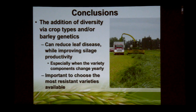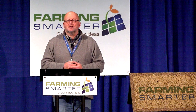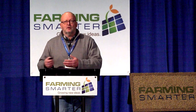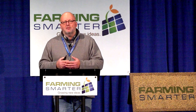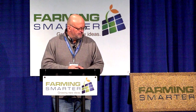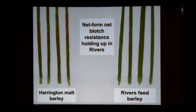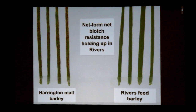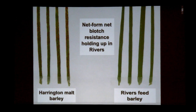One very important lesson from this study: choose the most resistant varieties possible. If you're looking at using mixtures or intercropping, try to choose a variety with an excellent package of resistance — meaning the breeders and pathologists have incorporated resistance so that variety is not affected by the disease of concern. You can see this with net blotch on Harrington, a susceptible variety, versus Rivers, a feed variety with fairly good levels of net blotch resistance.